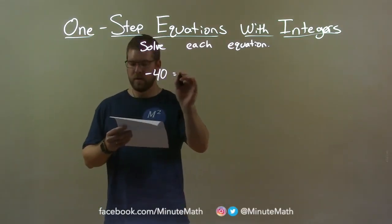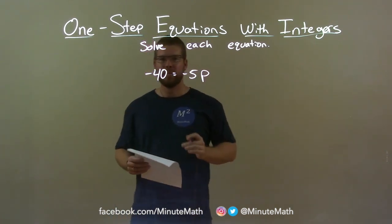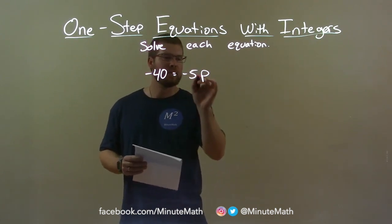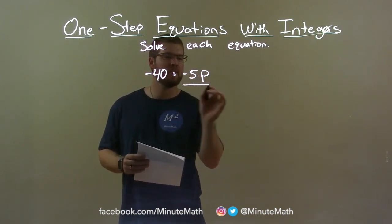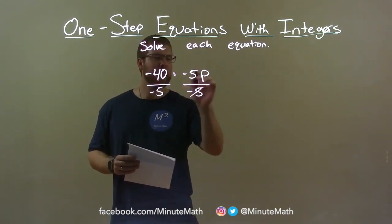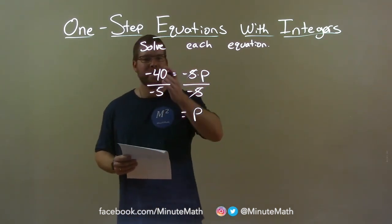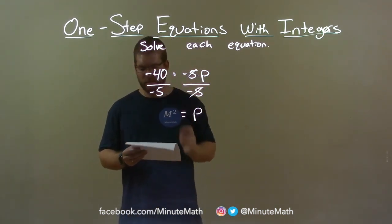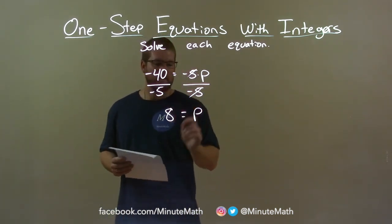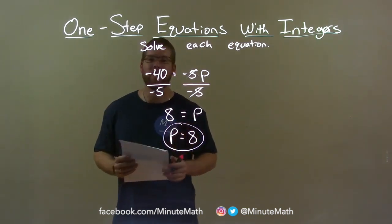Negative 40 equals negative 5 times p. I want to get p by itself, so I need to move negative 5 to the other side. Opposite of multiplication is division. So I divide both sides by negative 5. Negative 5s cancel, giving me p by itself on the right. Negative 40 divided by negative 5 is a positive 8 — negative divided by negative is positive. So p equals 8, or we can write p first: p equals 8 is our final answer.